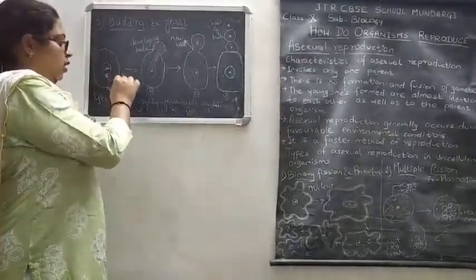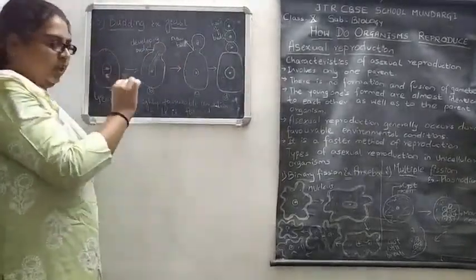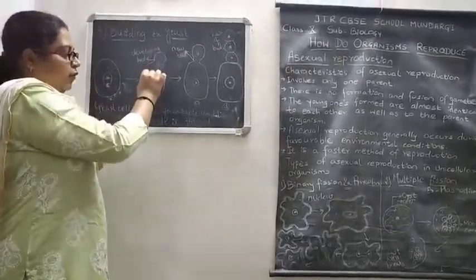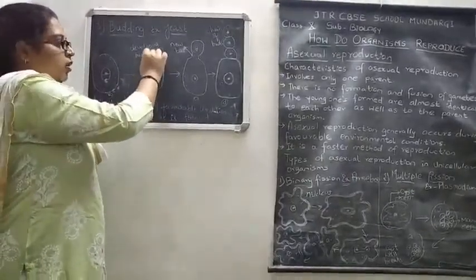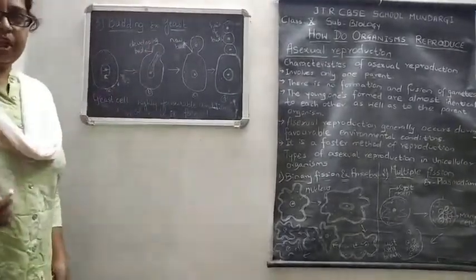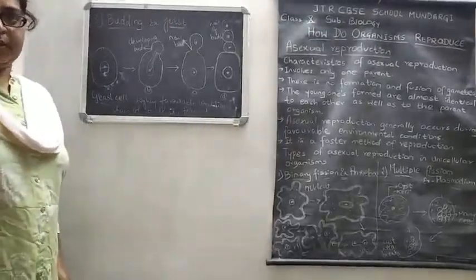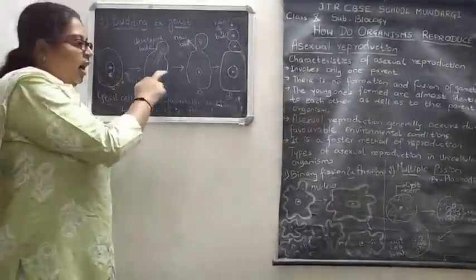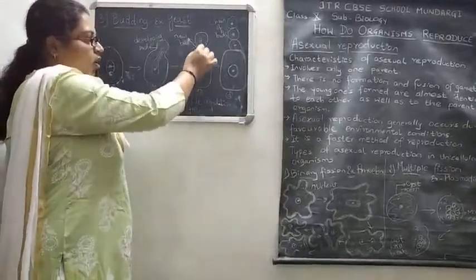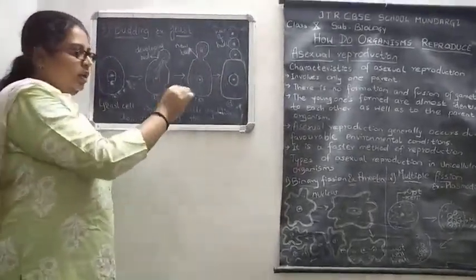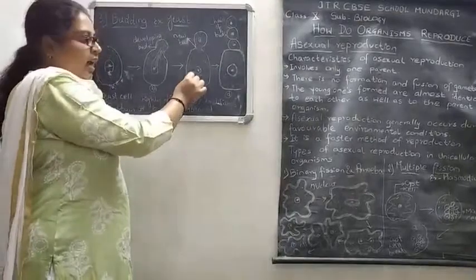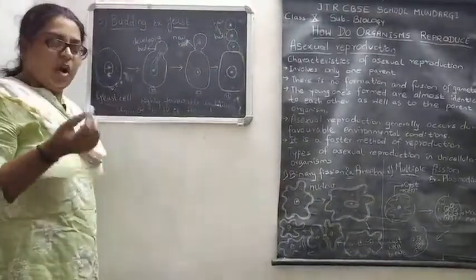During budding, the nucleus of the yeast cell divides and forms two nuclei. The divided nucleus moves toward the outgrowth that has formed, and along with the nucleus, all cytoplasm contents also move toward the outgrowth. The bud gets all the nourishment and necessary materials for growth from the parent yeast cell.